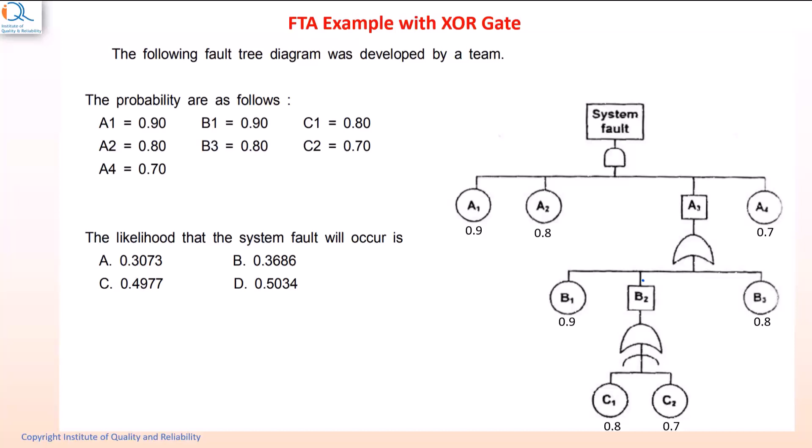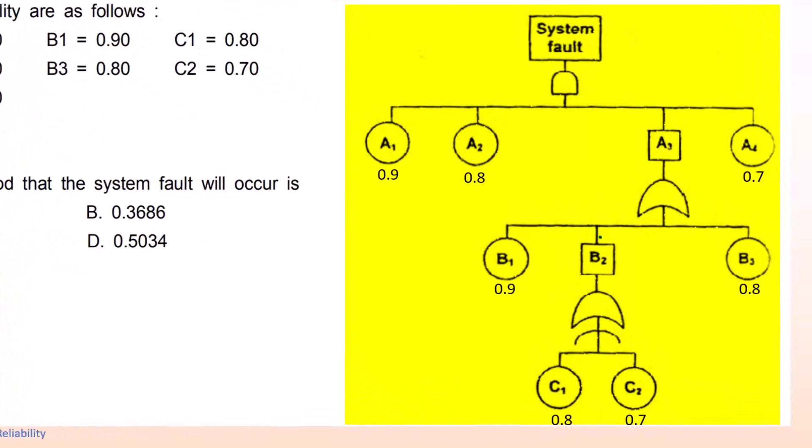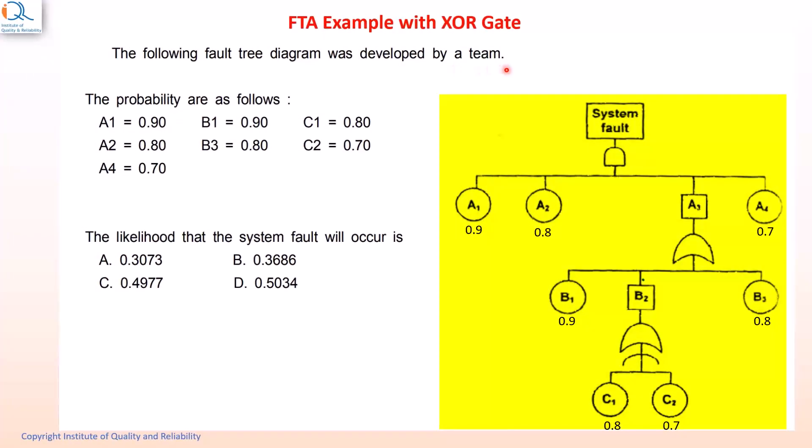Now, let us see a more complex example with XOR gate. The following fault tree diagram was developed by a team with various probabilities given for A1, A2, A3, A4 and lower level events B1, B2, B3 and C1 and C2. The probabilities are mentioned against each of the event.